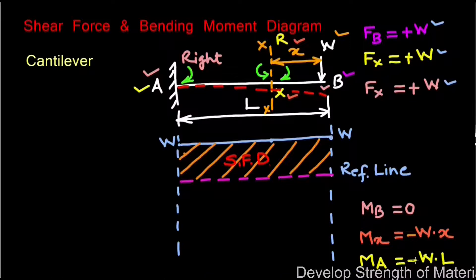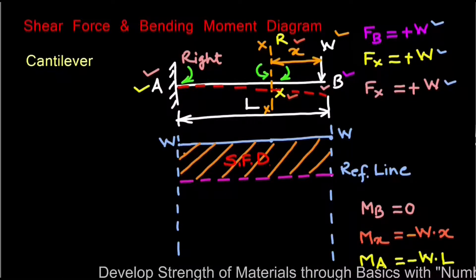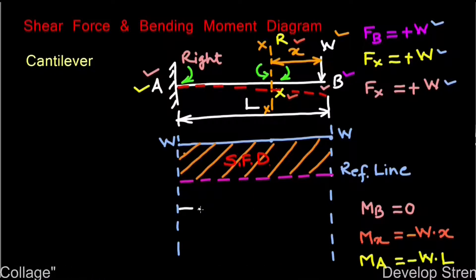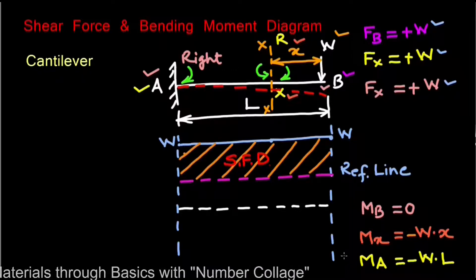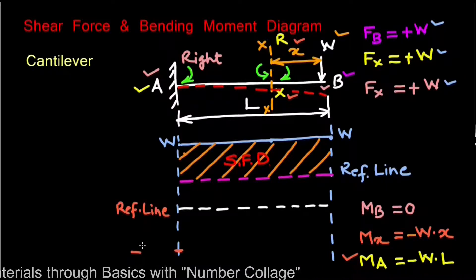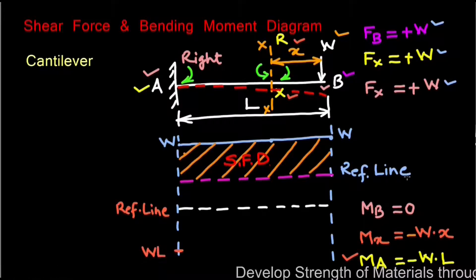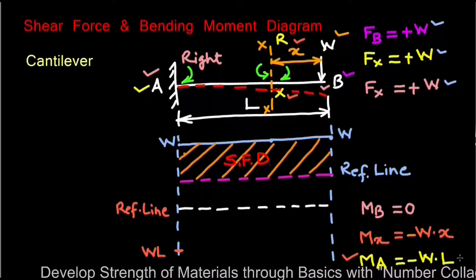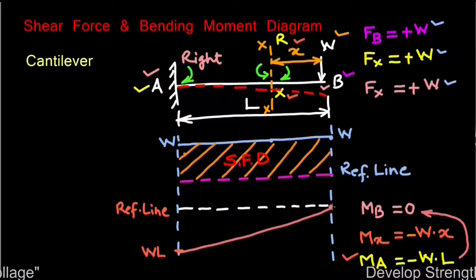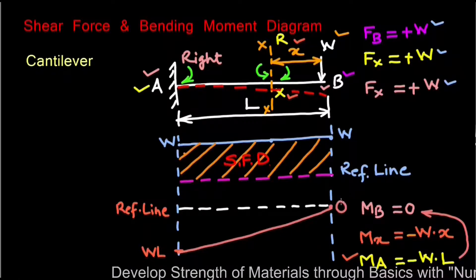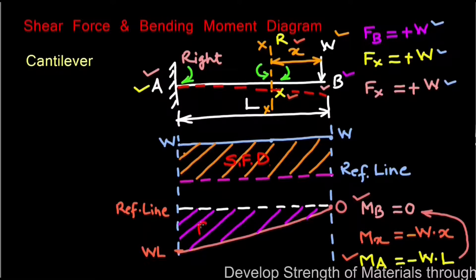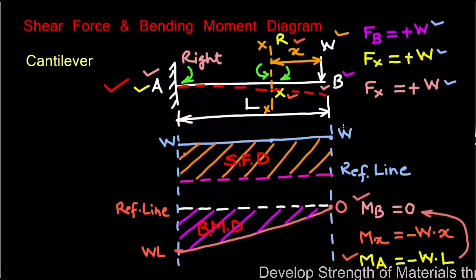The bending moment at point A is MA equal to −WL, since the bending moment is clockwise to the right of point A. To draw the bending moment diagram, we draw a reference horizontal line. The negative bending moment at A is maximum at WL, so we mark this point below the reference line. Since the bending moment reduces linearly from WL to 0, we draw a straight line joining WL to the zero at point B, forming a triangular bending moment diagram.